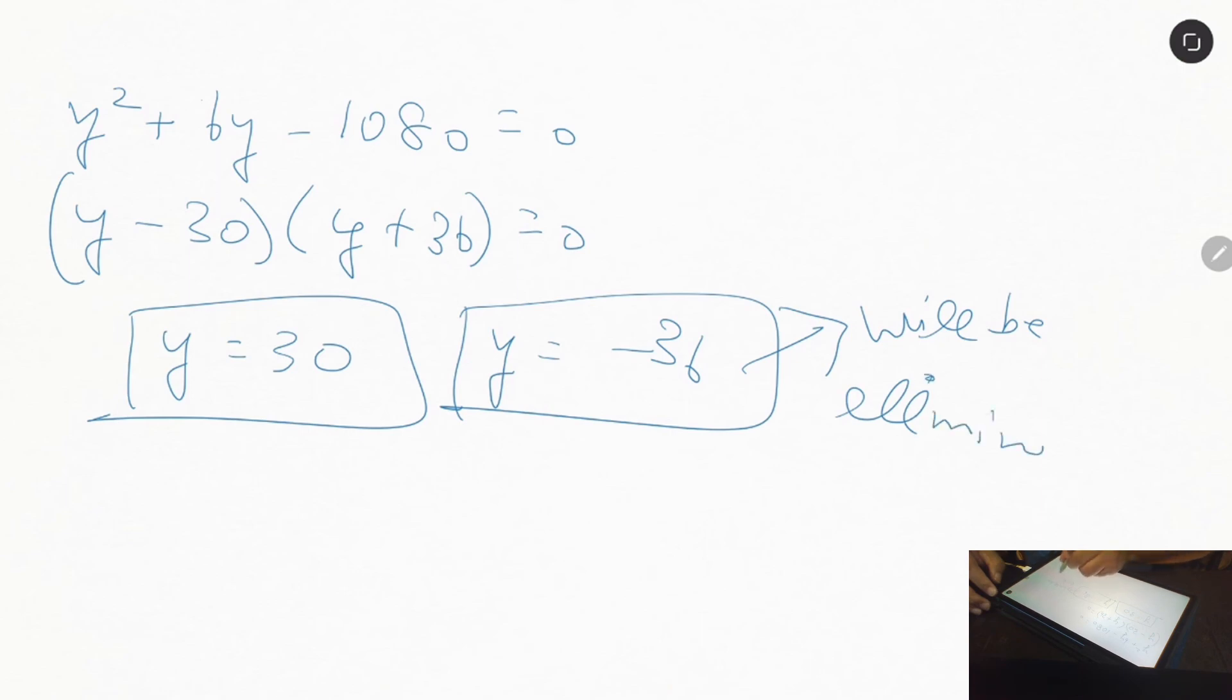So the negative value is eliminated, so Y = 30. So the result will be 540 divided by 30, which equals 18 years. So this will be the result.